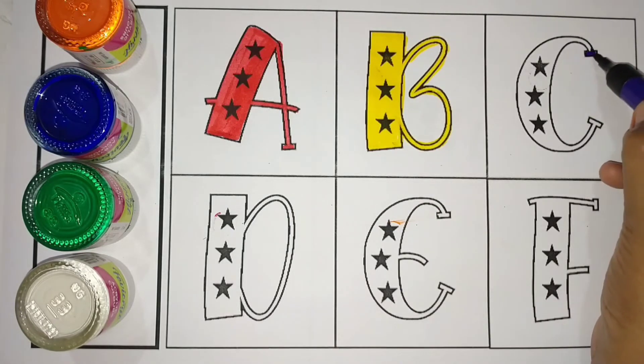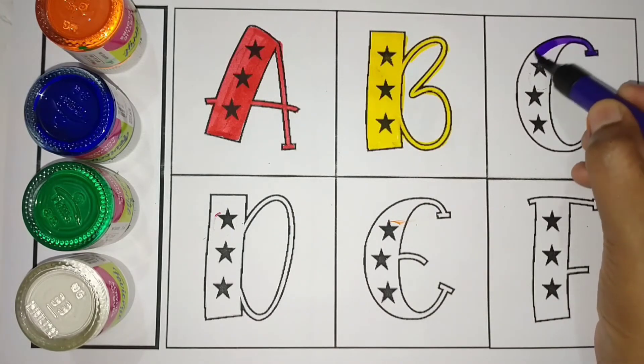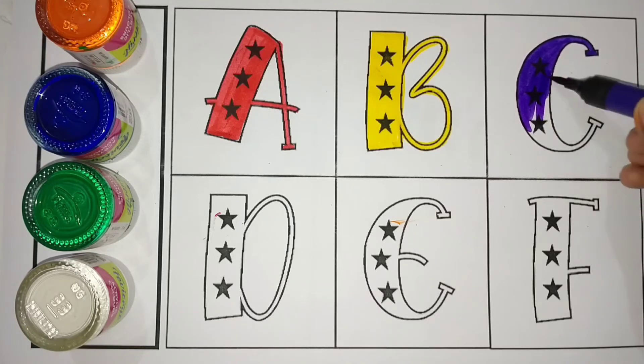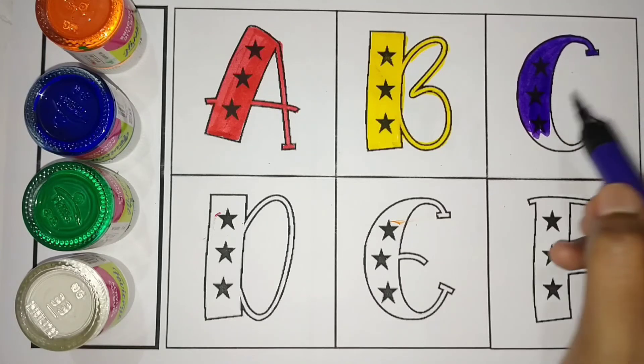Purple color, C, C for Cat. Cat, Cat means Billy. C, C for Cat.